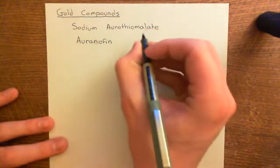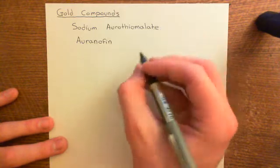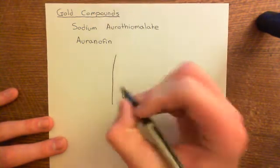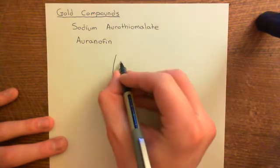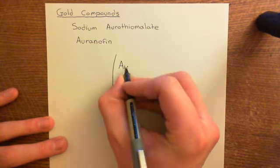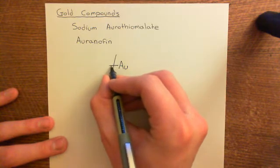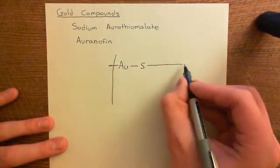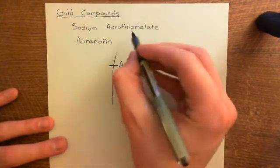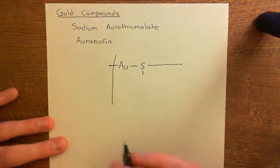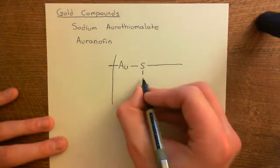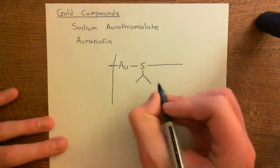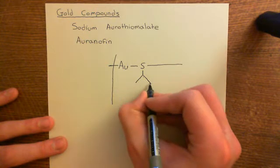I'm going to show you the structure of sodium aurothiomalate — it's quite simple, a nice polymer, a massive great molecule. The monomer repeated over and over again contains a gold atom (symbol AU) with a covalent bond to a sulfur atom, which links to the gold atom of the next monomer along. Off this you then have the malate group. Malate is a four-carbon dicarboxylic acid molecule with carboxylic acid groups at either end — the same malate from the Krebs cycle.